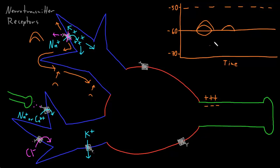The most common cause of an excitatory graded potential in neurons is entry of sodium ions through neurotransmitter receptors that allow sodium ions to pass when the neurotransmitter is bound. The mechanism would be the same for calcium ions — they also flow into the neuron, bringing their positive charges in, which then rapidly spread out in every direction, causing an excitatory potential.